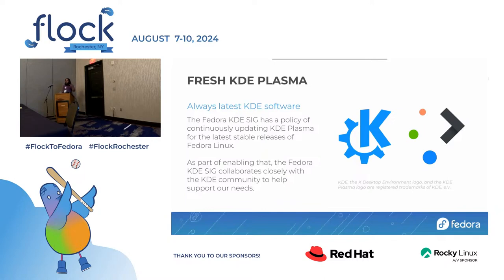We try to have the latest stack available, and that's also true for KDE Plasma on enterprise Linux platforms. If you want to use KDE Plasma on CentOS Stream 9, RHEL 9, or derivatives like AlmaLinux, you'll have the very latest KDE Plasma 5. When CentOS Stream 10, RHEL 10, and so on arrive, we'll have the very latest KDE Plasma 6. We also work closely with the KDE community upstream to maximize the quality of the experience we provide to our users.